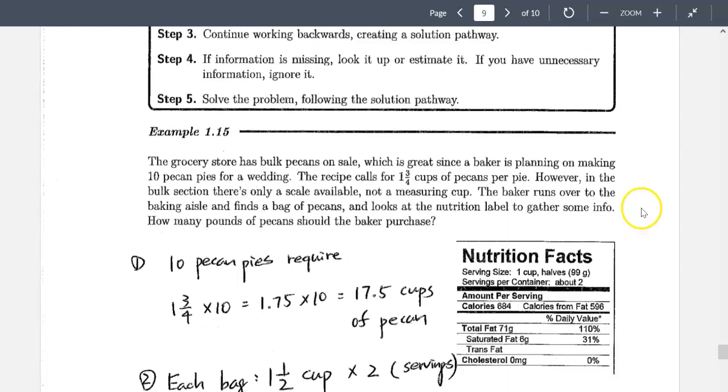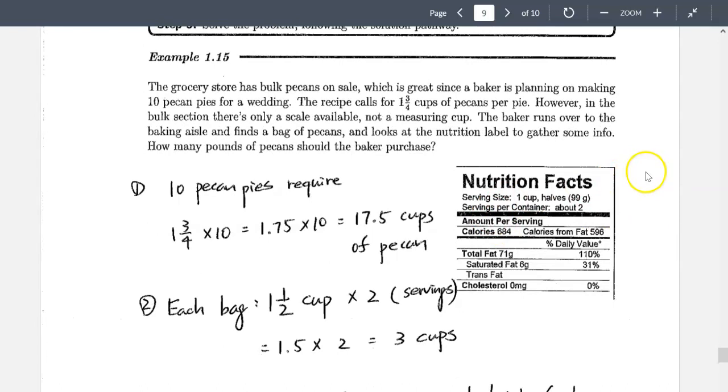So let's take a look at the first example they gave us. The grocery store has bulk pecans on sale, which is great since the baker is planning on making 10 pecan pies for the wedding. The recipe calls for one and three-fourth cup of pecans per pie. However, in the bulk section, there's only a scale available, not measuring cups. So the baker runs over to the baking aisle and finds a bag of pecans and looks at the nutrition label.